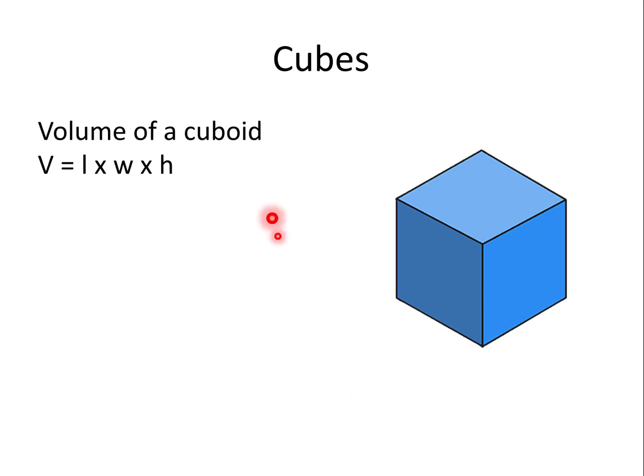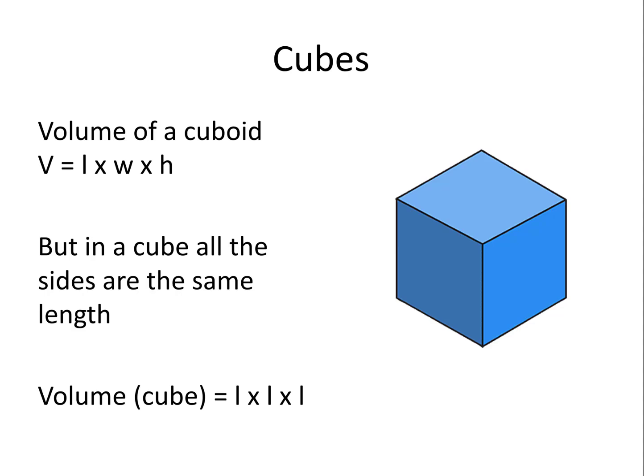Cubes. The volume of a cuboid is length times width times height. But in a cube, all the sides are the same length. So that's the same as length times length times length, or length cubed.